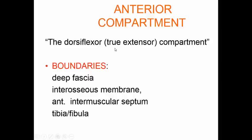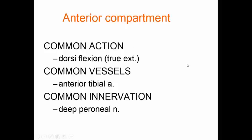The anterior compartment is home to the dorsiflexors and dorsiflexion is known as true extension. The boundaries of the anterior compartment are deep fascia, interosseous membrane posteriorly, the anterior intermuscular septum laterally, and the bones, the tibia and the fibula. The common action of the anterior compartment is dorsiflexion which is true extension.